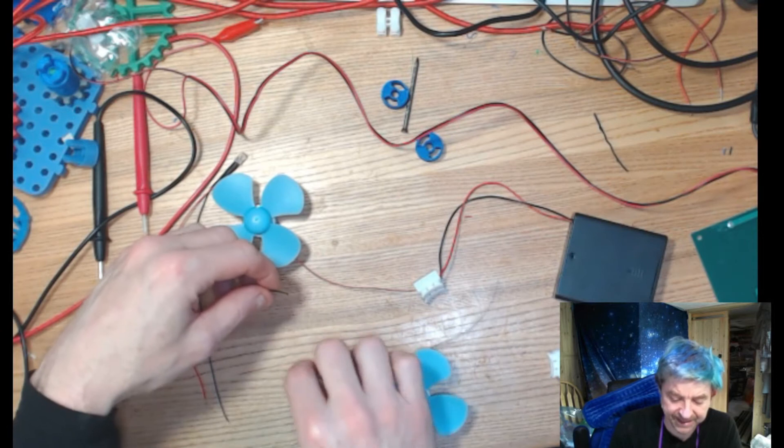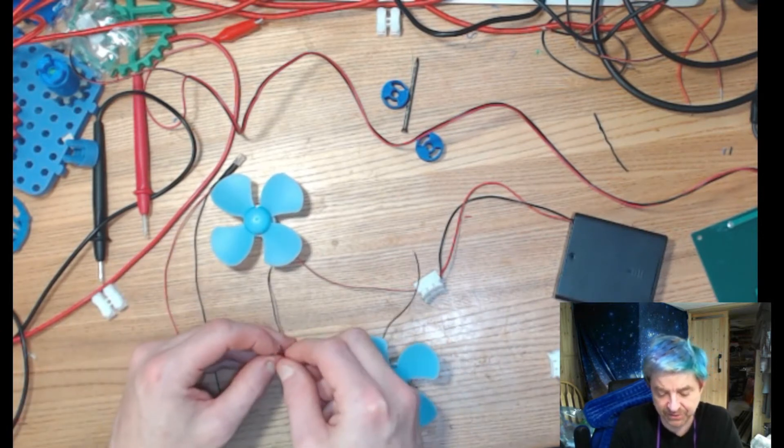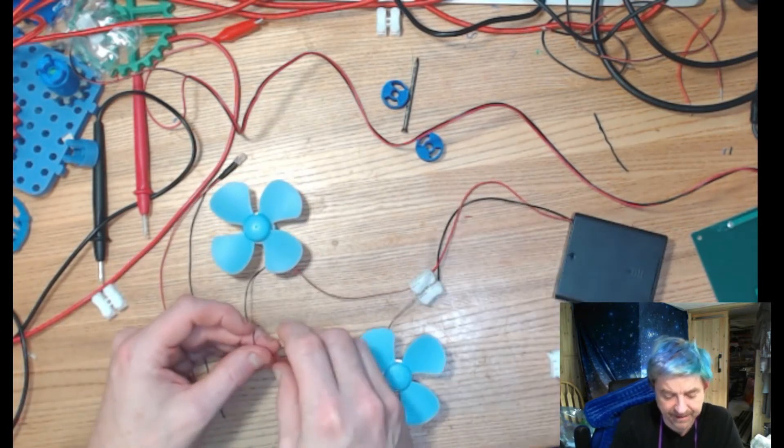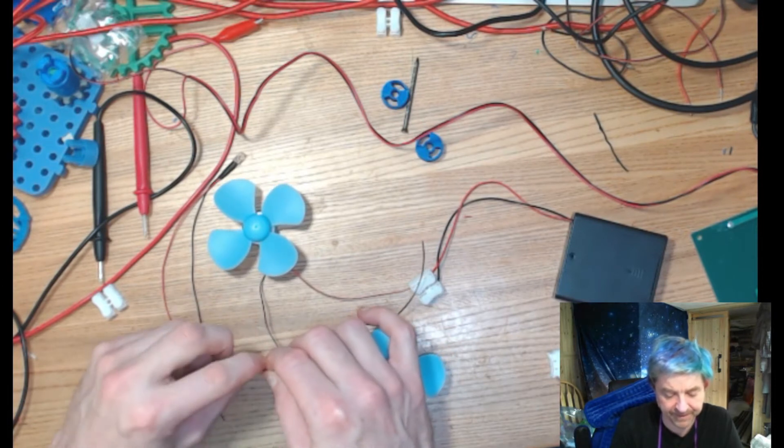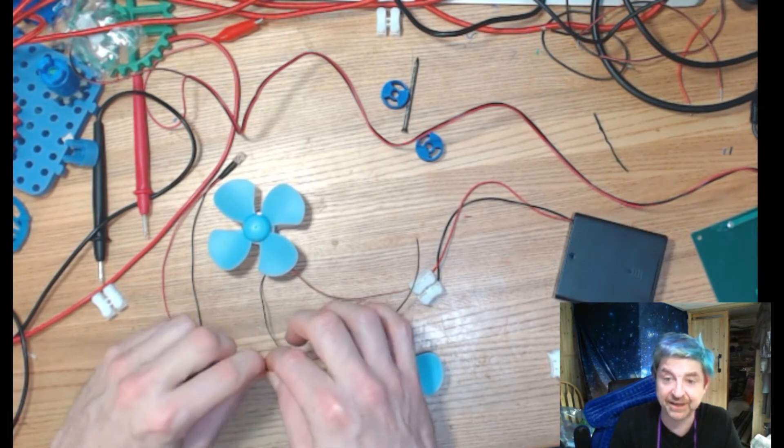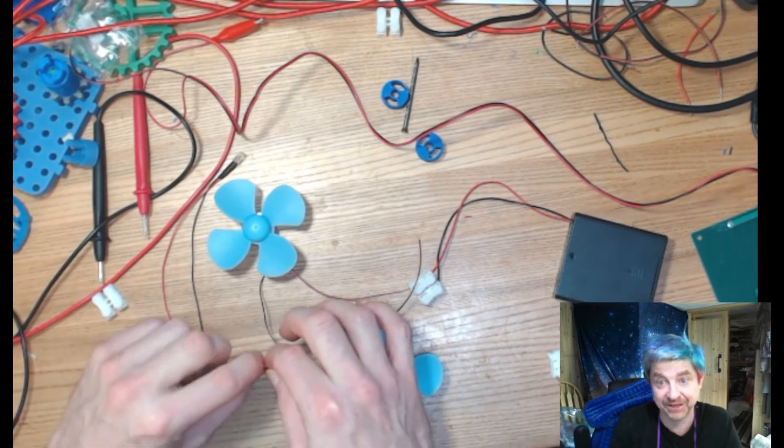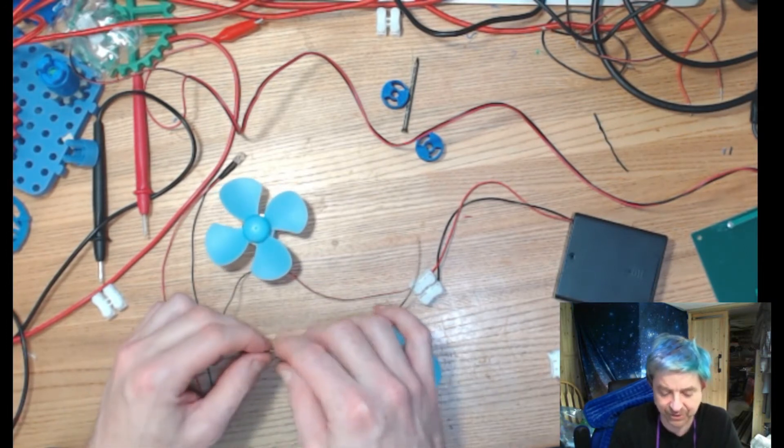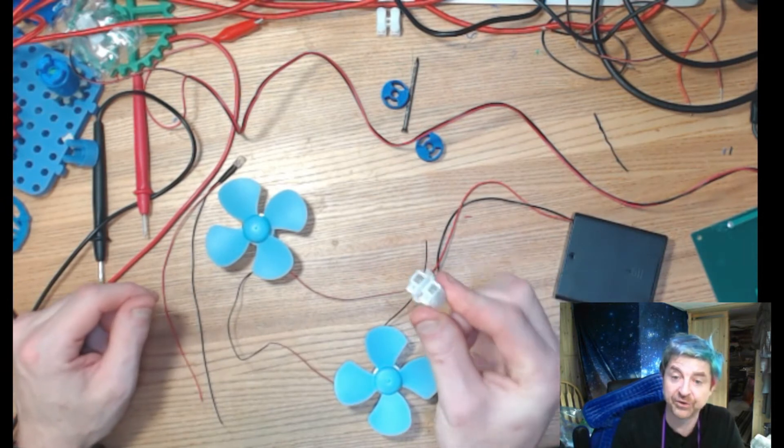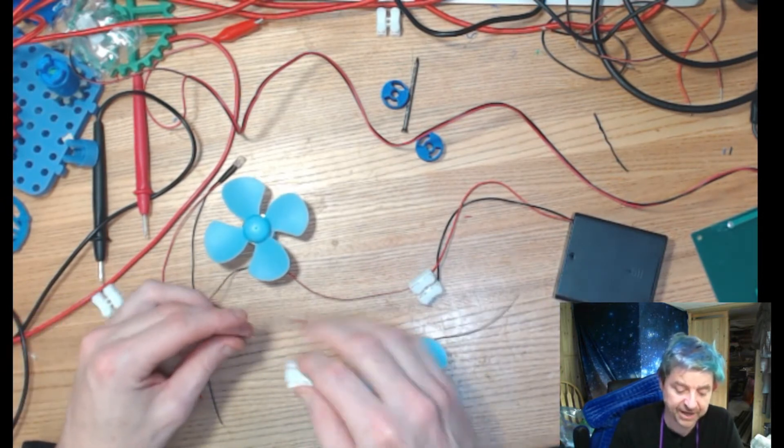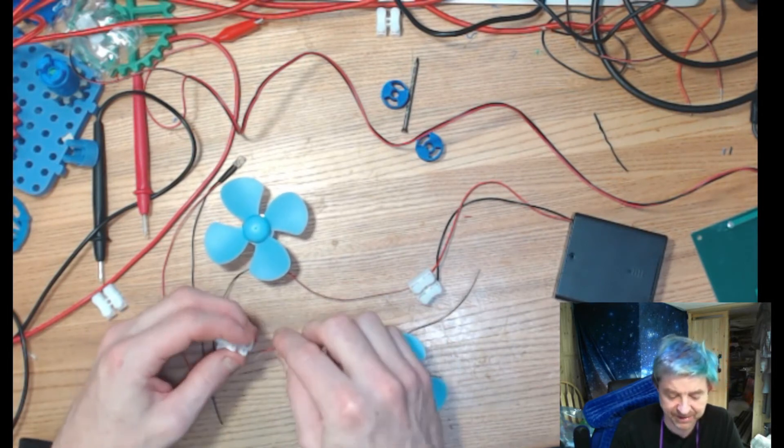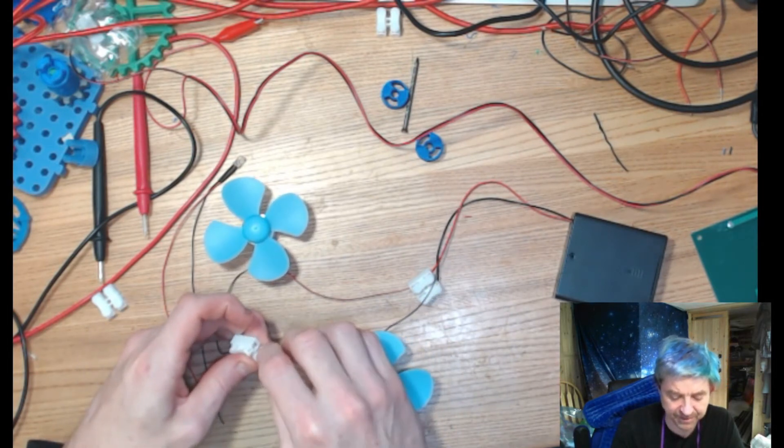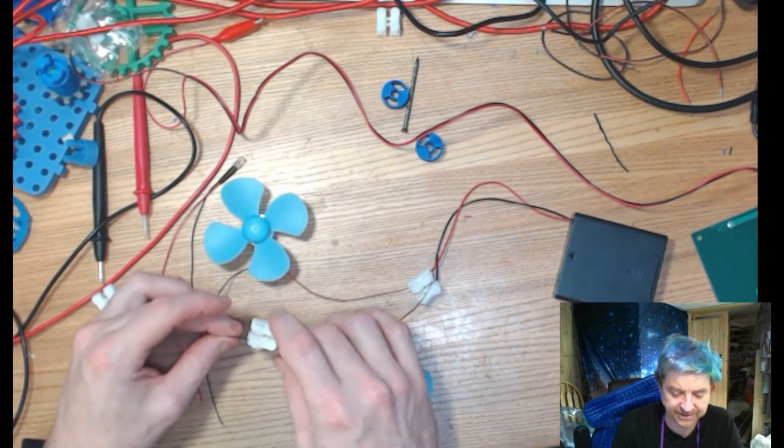So what I want to do is connect that to the positive side of my fan. If you did it the other way, all that will happen is your fans will spin in different directions, so nothing bad. You can twist it together, or if you have another terminal block, you can terminal block them together. You just have to make sure that you get the wires stuck in there nice and tight so they don't come out.